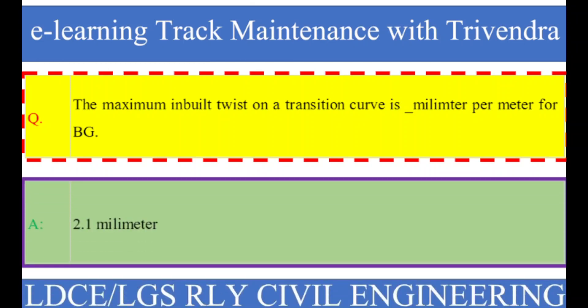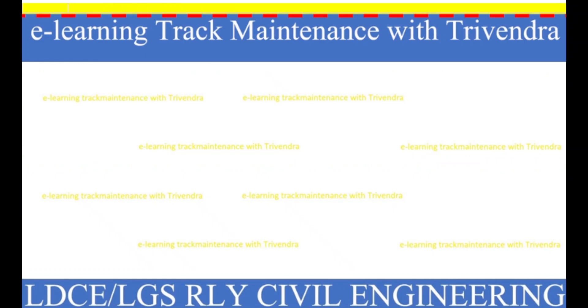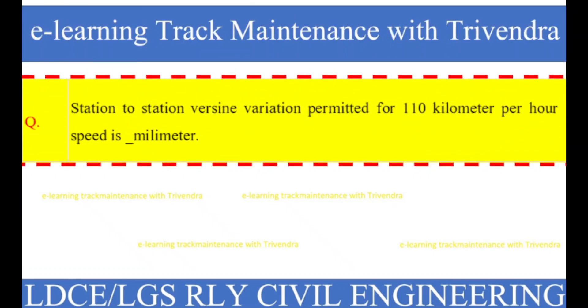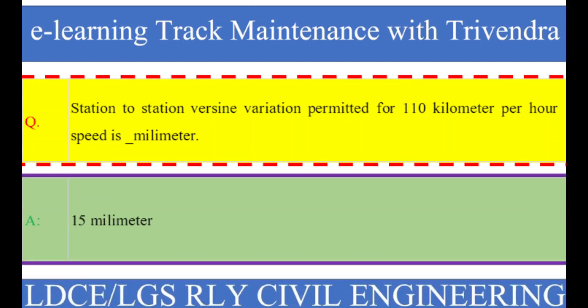Question number 64: Station-to-station versine variation permitted for 110 kilometers per hour speed is how many millimeters? The right answer is 15 millimeters.